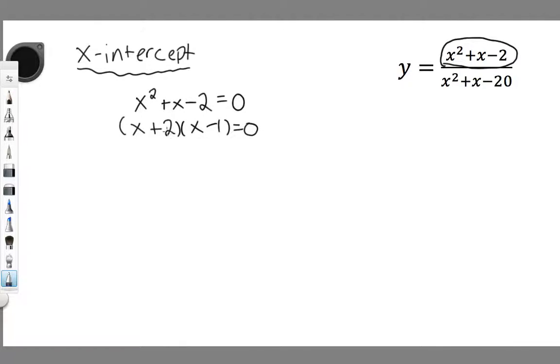It looks like x plus 2 and x minus 1 will work. Let's just check and see if that works. 2 plus negative 1 is 1, and then multiply to give me negative 2. Yep, that works. Now it's factored.